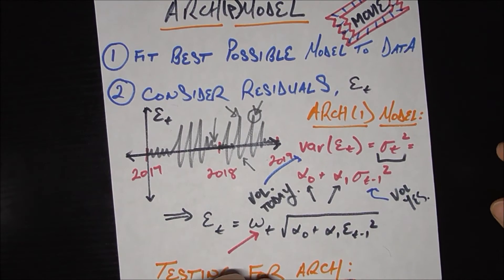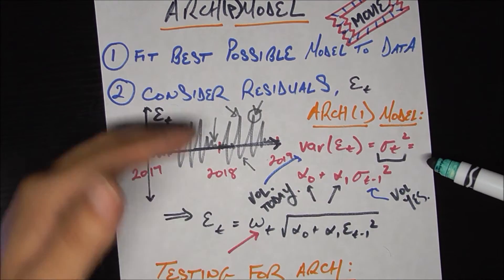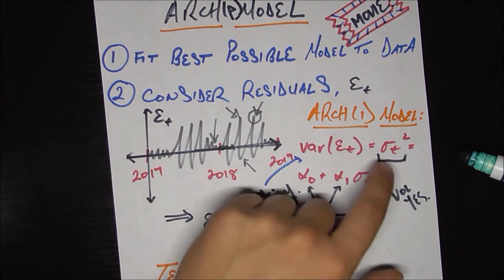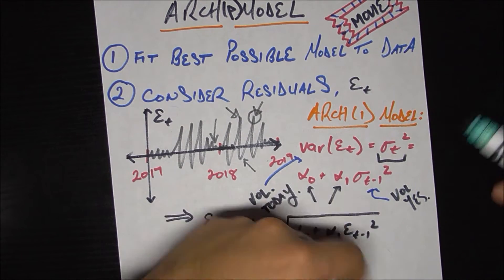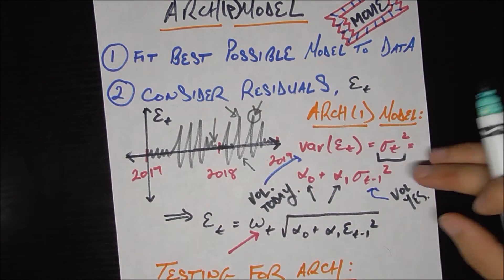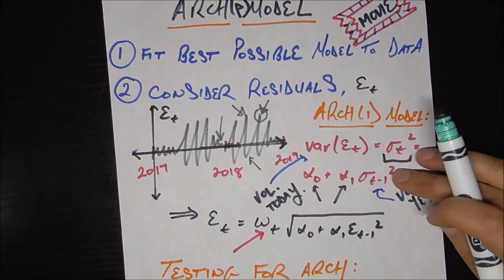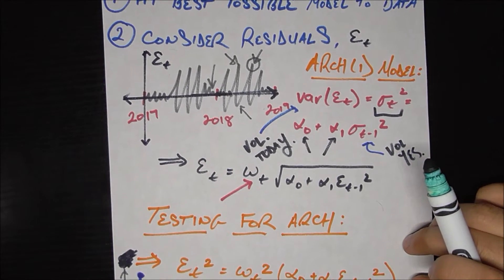So reading this like a story, it says that how crazy you're swinging today in terms of how off you are from the mean is going to be a function of how crazy you're swinging around the mean yesterday, which is exactly what we see in this plot, right? If your volatility was high today, it was probably high yesterday, and that's going to help us make our prediction even better.